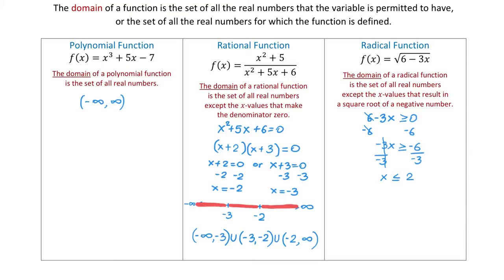Let's look at the number line again. To the right is positive infinity and to the left is negative infinity. All numbers less than or equal to 2 lie to the left of 2, from negative infinity to 2 including 2. So in interval notation we write an open parenthesis, negative infinity, comma 2, and then a closing bracket to show that 2 is included. The domain of this radical function is all numbers from negative infinity to 2.